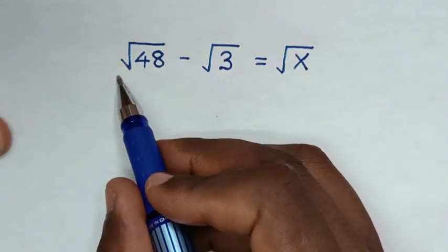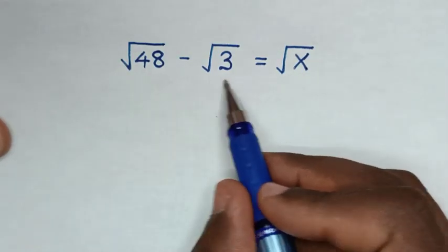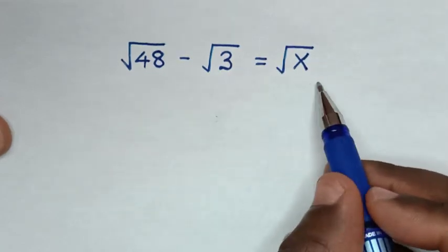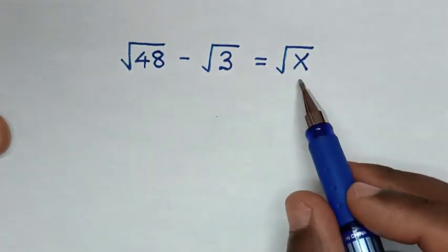Hello, how to solve square root of 48 minus square root of 3 equals square root of x. To find the value of x from this equation.